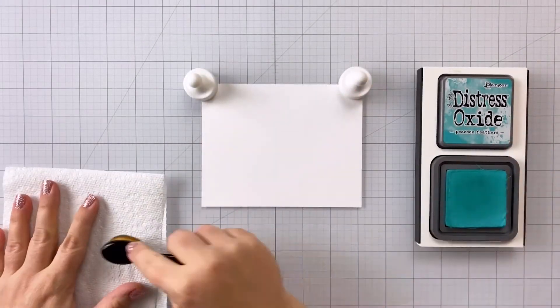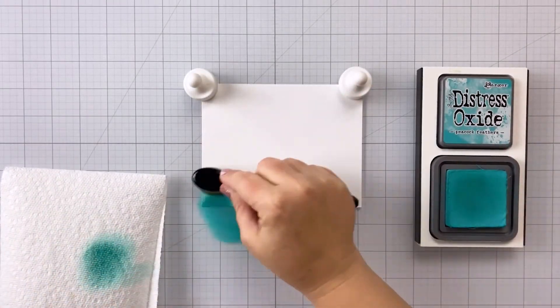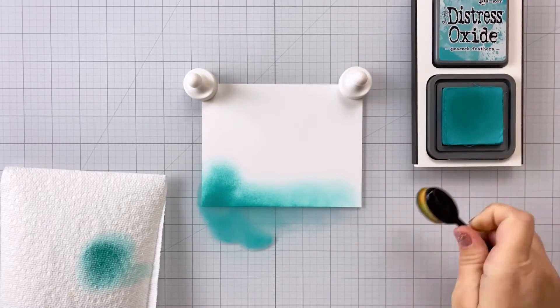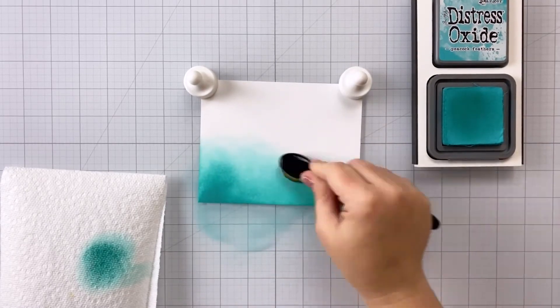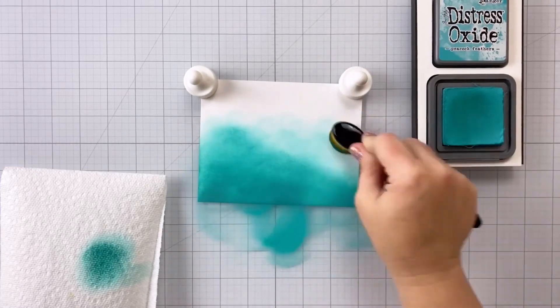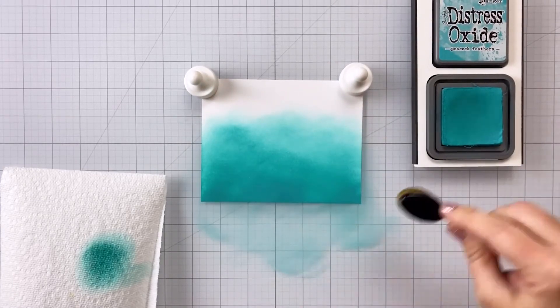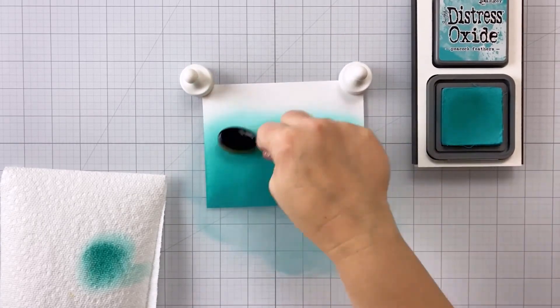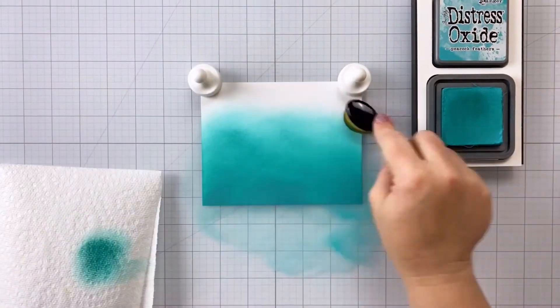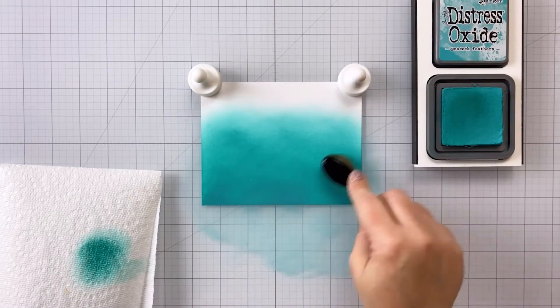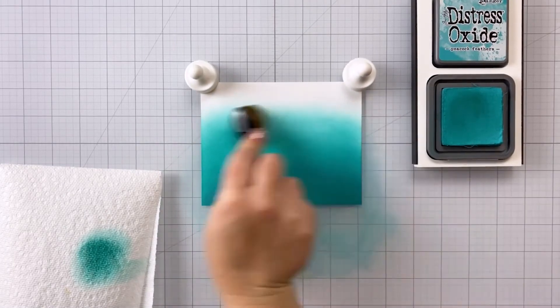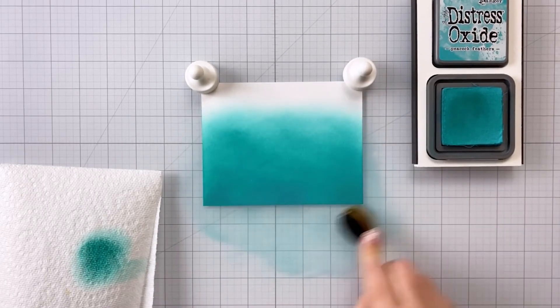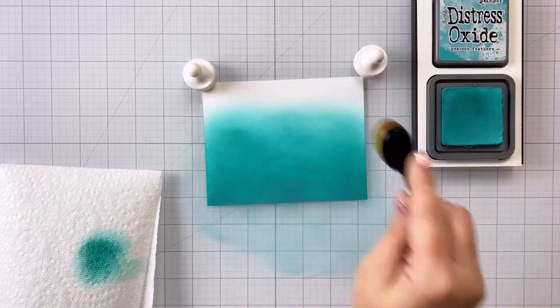So now we're going to put together our background. Very simple. We're coming in here with some more distress oxide and we're using peacock feathers. And I've got a piece of cardstock here that's cut slightly larger than 4¼ by 5½. And that's because when I'm done, I am going to trim off the edges, but I'm coming up from the bottom and I'm working my way up towards the top because I want this to fade from a really dark solid tone of the peacock feathers to a very light kind of airy tone. And most of this will get covered up by that cluster, but the parts that are peeking through, it will be noticeable that it goes from dark on the bottom to light all the way on the top.